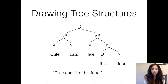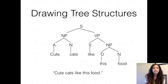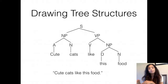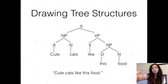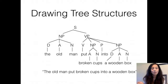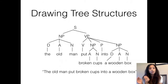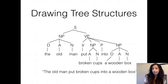You can also draw bigger tree structures, like 'the cute cats like this food.' Start top-down: begin with S goes to NP and VP, then branch out the NP using the NP rule — optional D, optional A, and N — and then your VP rule: an obligatory V, optional NP, optional P, and optional NP. You can also create more complicated tree structures like 'the old man put broken cups into a wooden box.' Start by doing the label bracketing, identify all the categories of each word, identify the constituency for each phrase, and then draw the tree top-down.